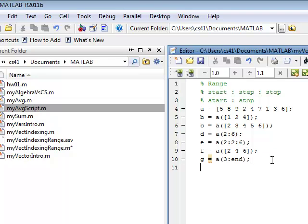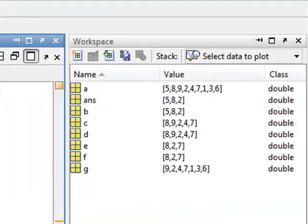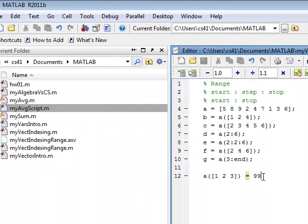It also works the other way in terms of assignments. I can assign values to a vector. So let's say if I go in here and I say A at one, two, three equals 99. Now, there are two things to note here. What I'm going to do is I'm saying assign the value 99 to the memory locations in A at index one, two, and three. And so when I run this, it does that. And so now A, the first three elements of A are 99, which that's fine.